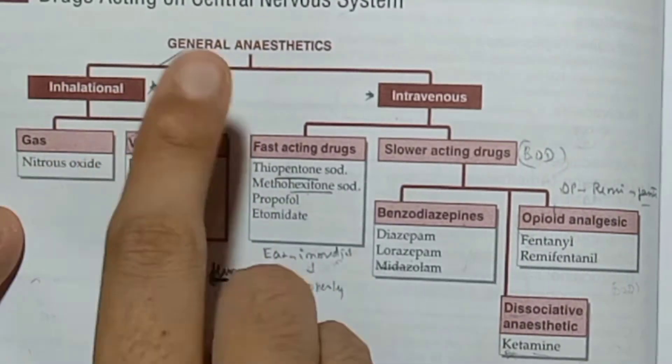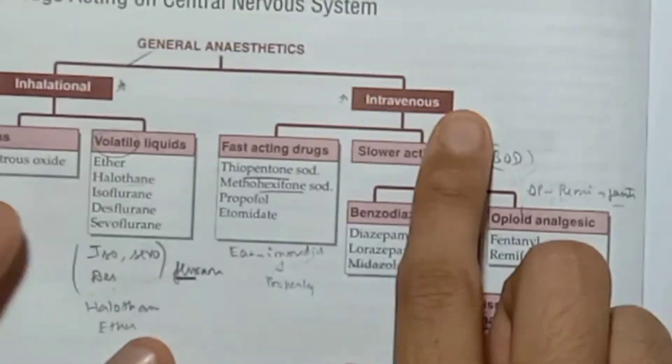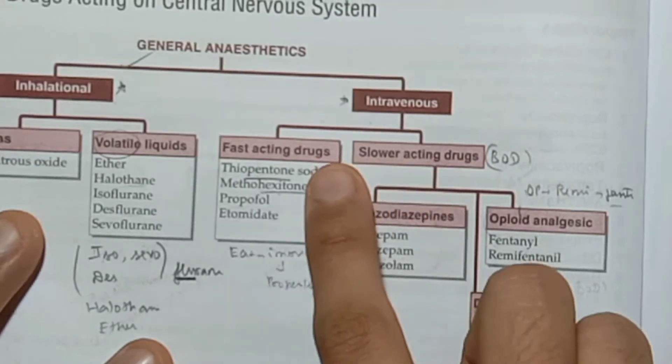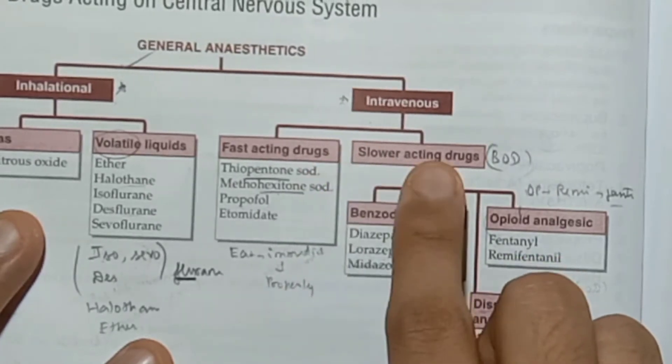Inhalation will include gas and volatile liquids. In intravenous anesthetics, we classify them as fast-acting and slow-acting.